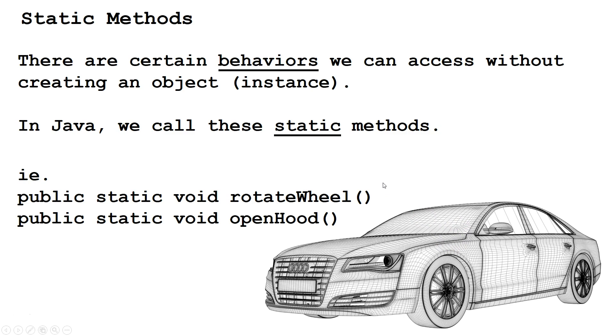Now, there are certain behaviors in Java that we can access without creating the object. We can do it simply from the class. And these are static methods in Java. We know they're static methods because they have the word static there. For example, we can rotate the wheel in this blueprint. We can open the hood in this blueprint. That's why these are static methods. We don't need to create the actual car to use them, though we could use them on an actual car.